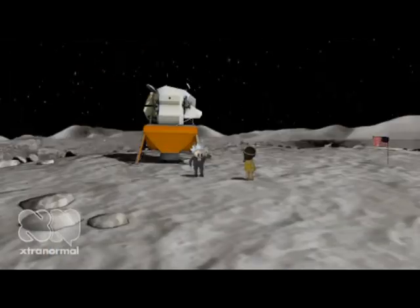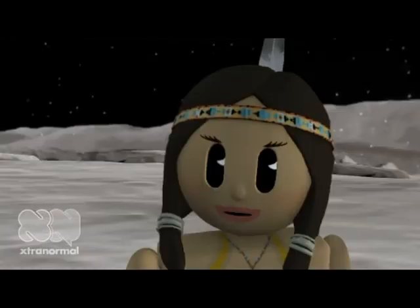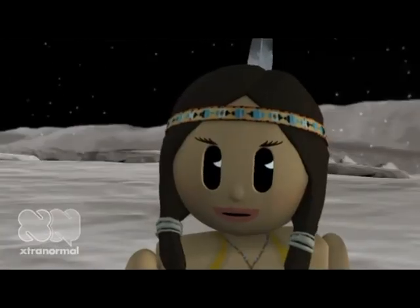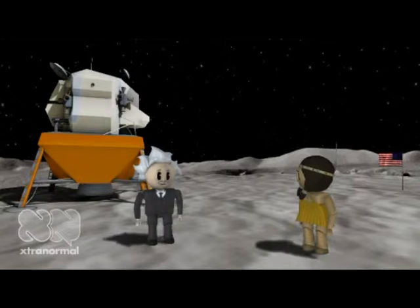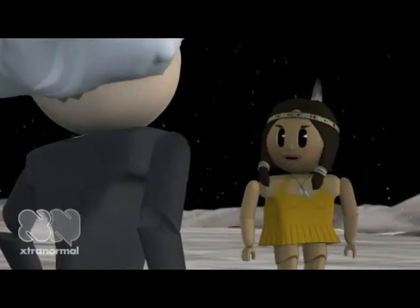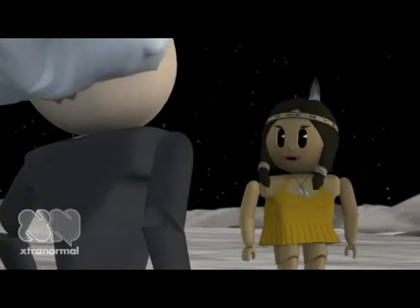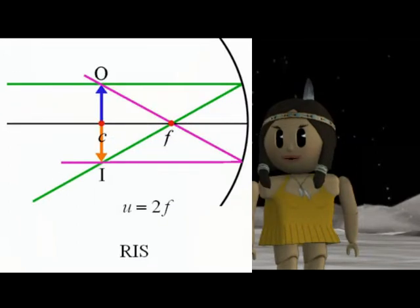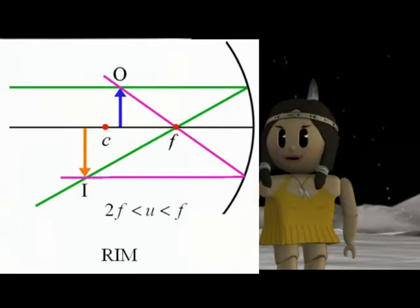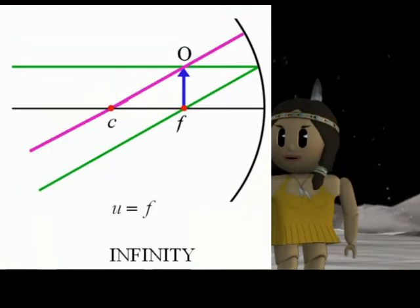Really? Rit ris rim infinitivum. Five natures of image formed by a concave mirror: real inverted diminished; real inverted same size; real inverted magnified; image at infinity; virtual erect and magnified.